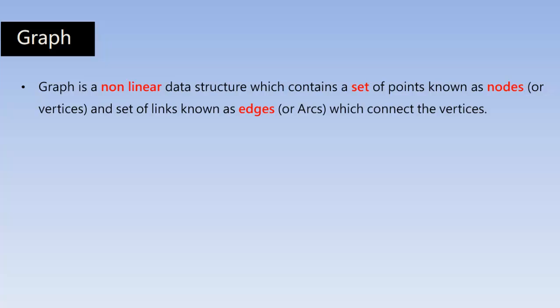Let's recall the definition of graph. A graph is a nonlinear data structure, which means elements are not stored in linear order. A graph contains a set of points known as nodes or vertices, and a set of links known as edges which connect the vertices. There are two kinds of representation of graph: we can use the adjacency matrix or the adjacency list to represent the graph in a data structure.